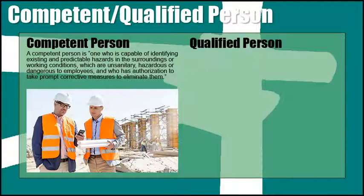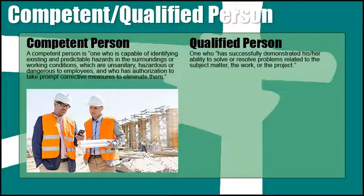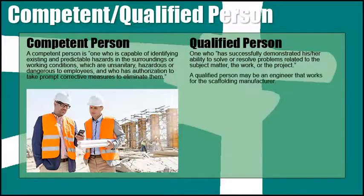In this case, this is typically someone who holds a scaffolding high-risk work license. A qualified person is one who has successfully demonstrated his or her ability to solve or resolve problems related to the subject matter, the work, or the project. In this case, a qualified person has the right background, such as education or a degree in designing safe scaffolding — for example, someone from the scaffold manufacturer or a trained scaffold engineer.